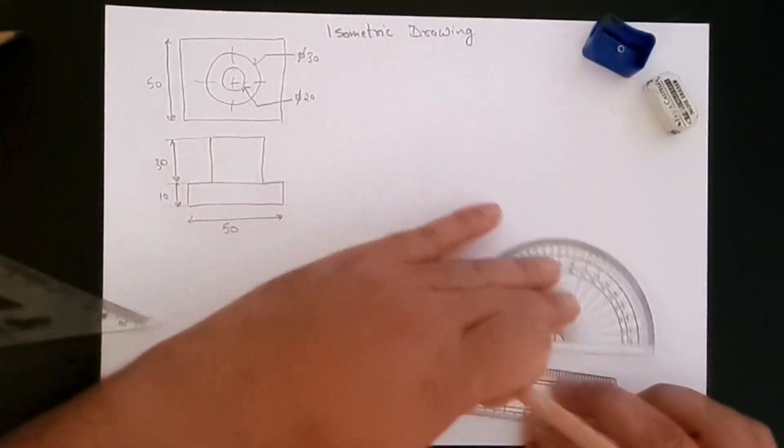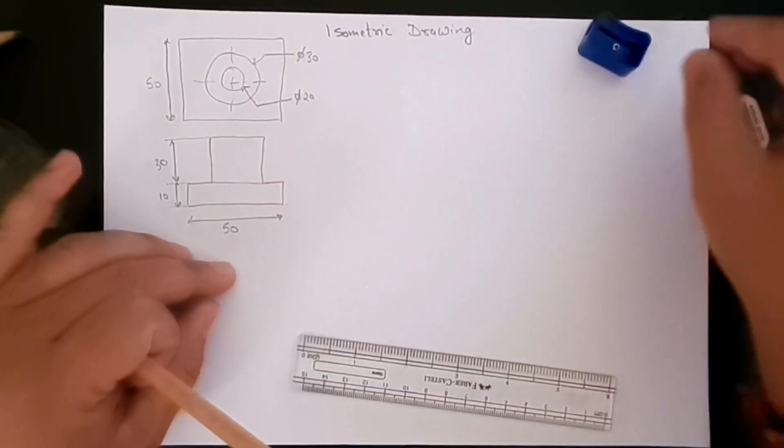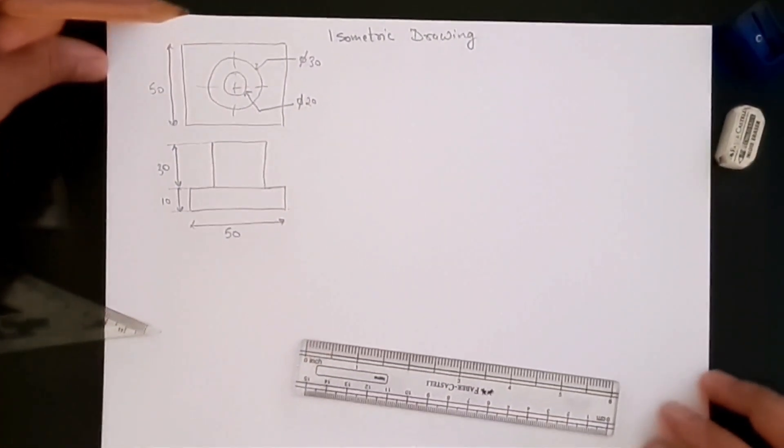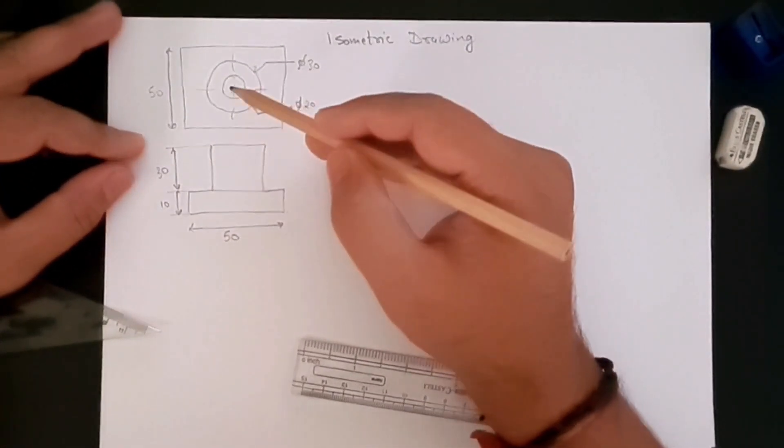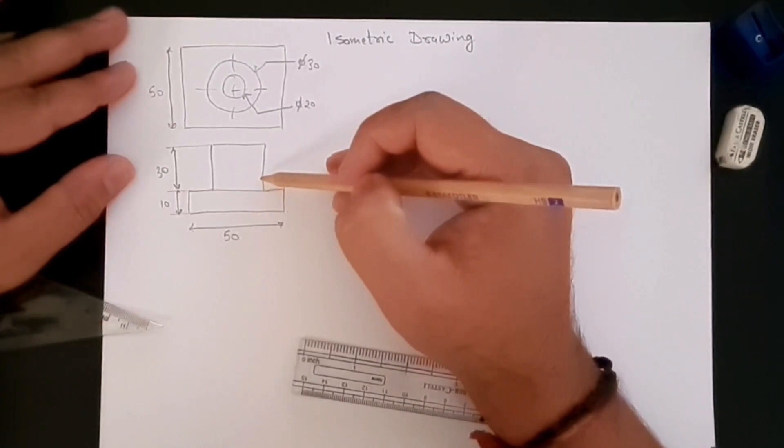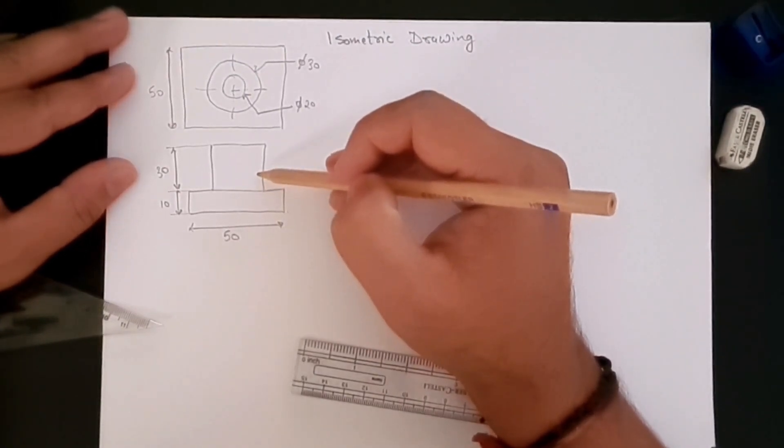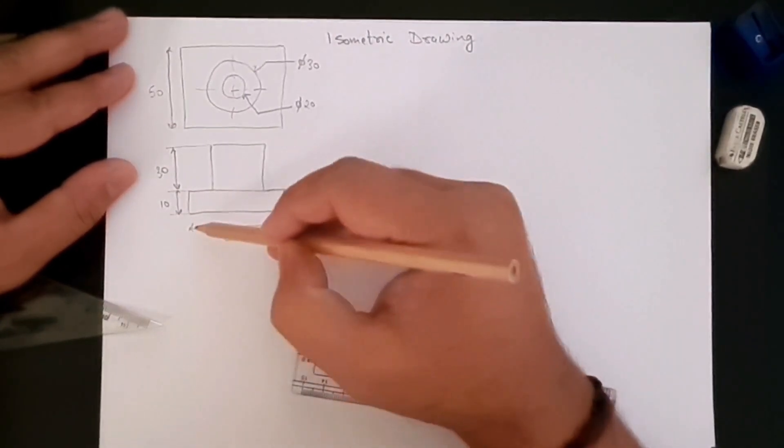We're using a compass, a protractor, eraser, and a sharpener. So the story here is that we went on site, we saw a part, and we created a rough hand sketch of that part.